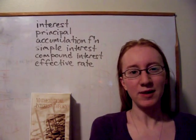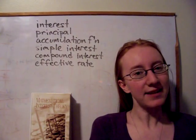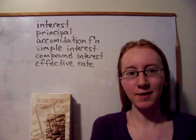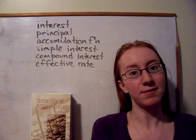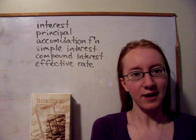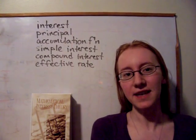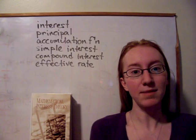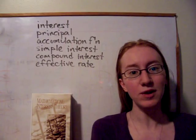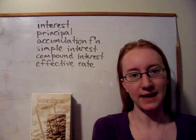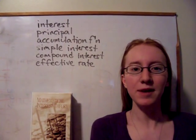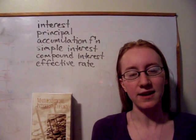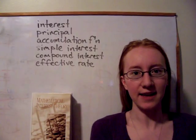Then we moved into a more mathematical definition of how money grows, and that was an accumulation function. An accumulation function, little a of t, is just the amount that the money has grown to by time t, and we usually assume a principal of one dollar invested at time zero.